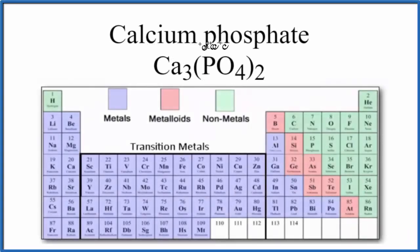In this video, we'll look at whether calcium phosphate, that's Ca3(PO4)2, is ionic or covalent. Short answer is that it's an ionic compound, but it does have covalent bonds within this phosphate ion.